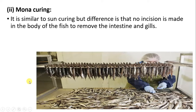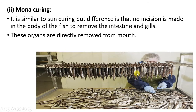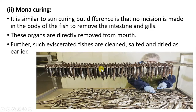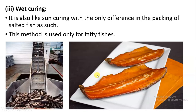The next method is mono curing. Mono curing is similar to sun curing, but the difference is that internal organs are removed from the mouth — no cut or incision is made on the fish body. Gills are removed, and important internal organs like the intestine are also removed from the mouth. This is how mono curing is done. The fish are eviscerated — meaning without internal organs. After removing internal organs, the fishes are cleaned, then salted, and then the drying process is done.